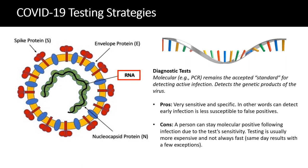We focused on molecular testing early on — it was the accepted, and in some cases called gold, standard. It detects the genetic product of the virus, is very sensitive and specific, can detect early infection and low viral loads, and is not as susceptible to false positives. However, that sensitivity works against us when a person needs to be cleared to return to work — some people stay positive for a long time. It is also more expensive and not always fast, though same-day results are usually achievable, and we do have a 20-minute test available.